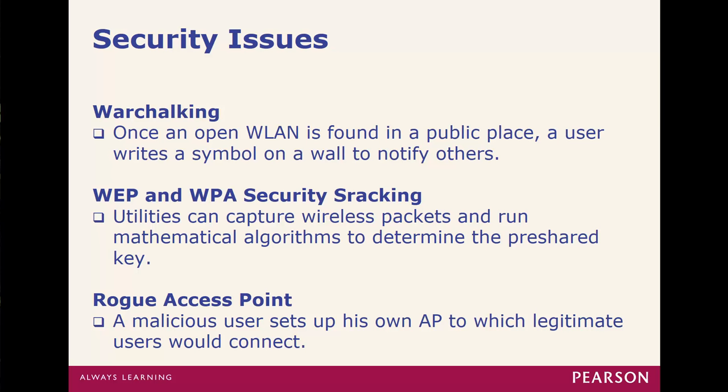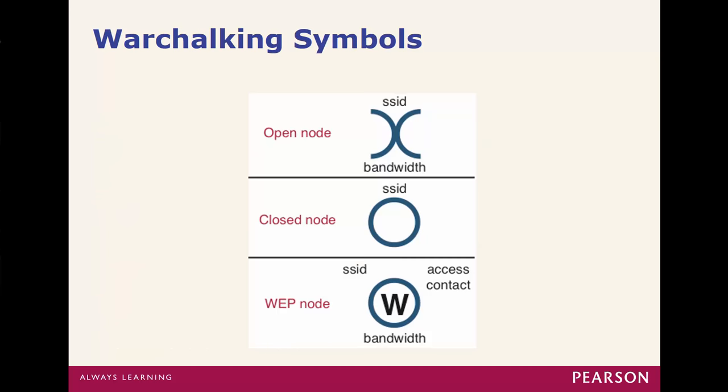You can also set up rogue access points. If a network already has Wi-Fi, you can add an additional unauthorized access point with less security — that's known as a rogue access point. War chalking involves writing a symbol on a wall in a public place once an open wireless network is found, to notify other users. War chalking symbols include open node, closed node, and WEP. These are less important for exam purposes than topics like Wi-Fi channels.